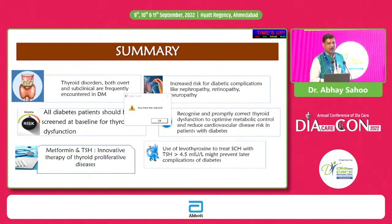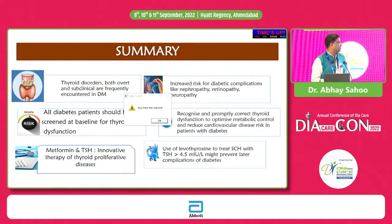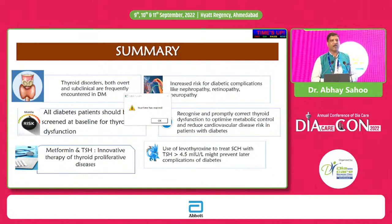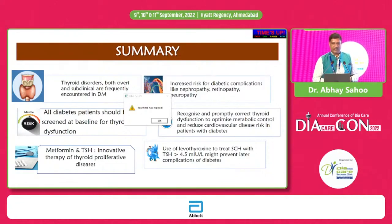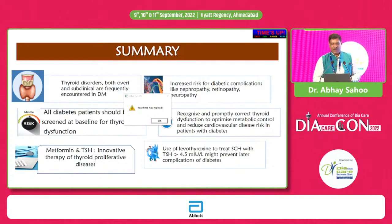In summary, thyroid disorders — both overt and subclinical — are quite frequent among diabetics. All diabetic patients should be screened with baseline thyroid function tests. Metformin may be an innovative therapy for thyroid proliferative disorders. There is increased risk of diabetic complications like nephropathy, retinopathy, and neuropathy in thyroid disorders. Recognizing and treating these promptly helps manage both conditions, and levothyroxine treatment of subclinical hypothyroidism with TSH greater than 4.5 might prevent later diabetic complications.